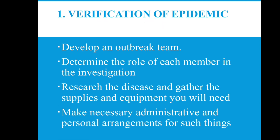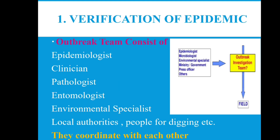For verification of epidemics, you need to: develop an outbreak team; determine the role of each member in the investigation; research the disease and gather the supplies and equipment needed; and make necessary administrative and personal arrangements. The outbreak team consists of epidemiologists, clinicians, pathologists, entomologists, environmental specialists, local authorities, and others. They all coordinate with each other.